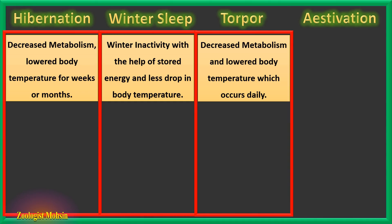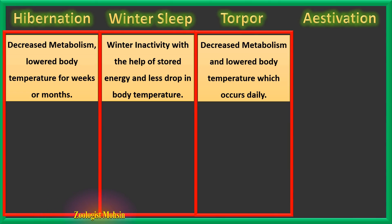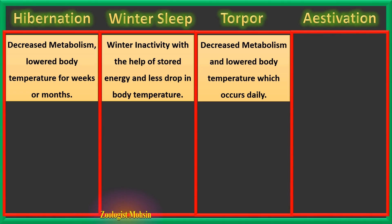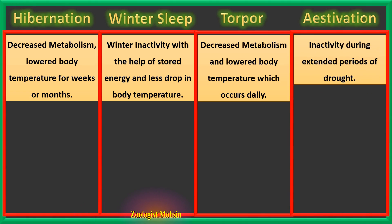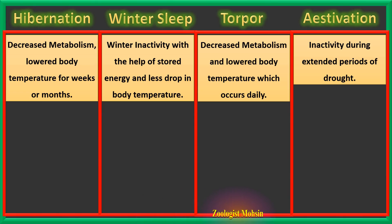Torpor is not extended over weeks, months, or years. Estivation is inactivity during extended periods of drought or dryness, and it may occur during winter or summer when rainfall is very low.